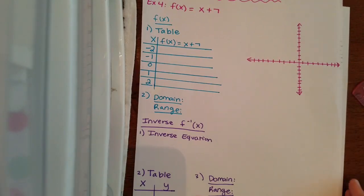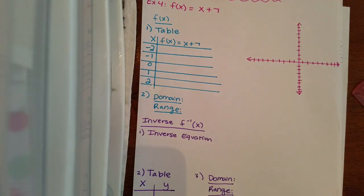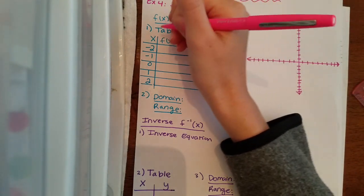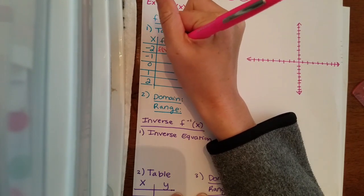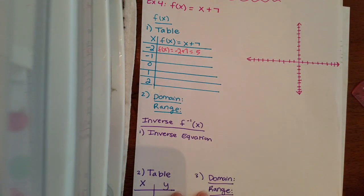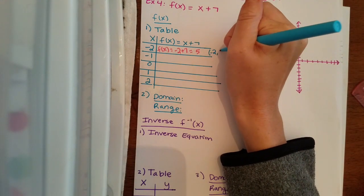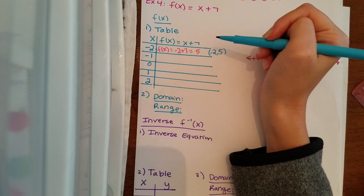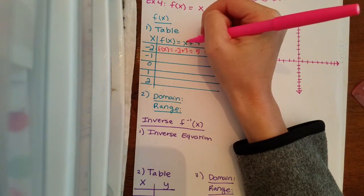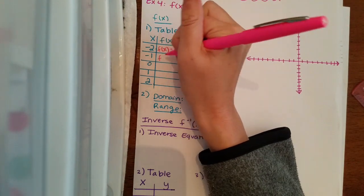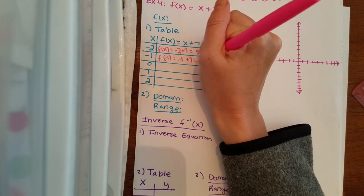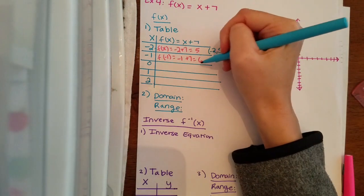We're going to find what y is when x is negative two. We replace our x with negative two, so it's going to be negative two plus seven, which equals five. So the first point we'll be plotting is negative two, five. Next, replacing x with negative one: negative one plus seven gives me six. So my next point is negative one, six.